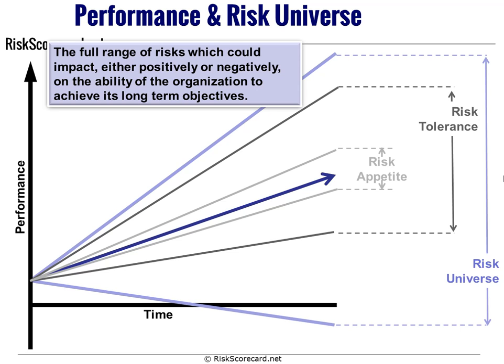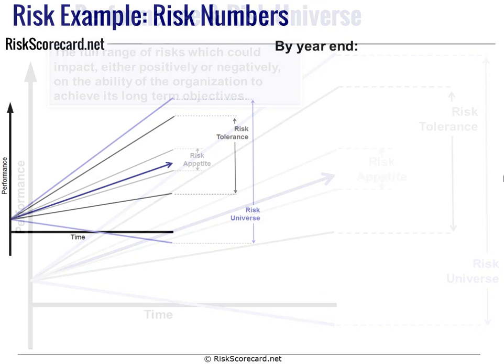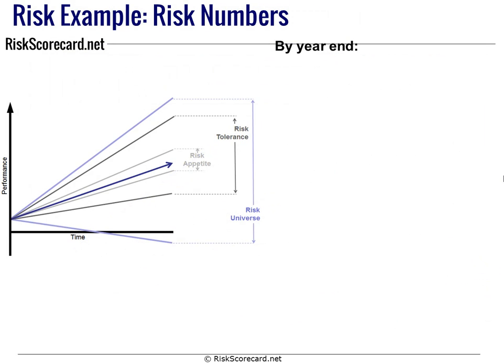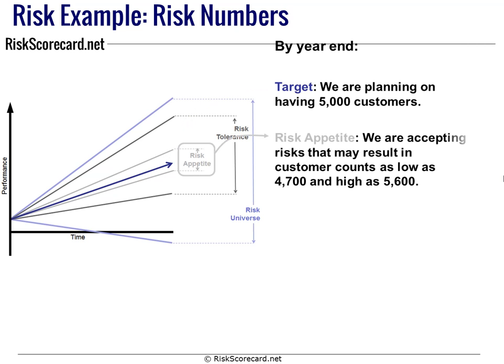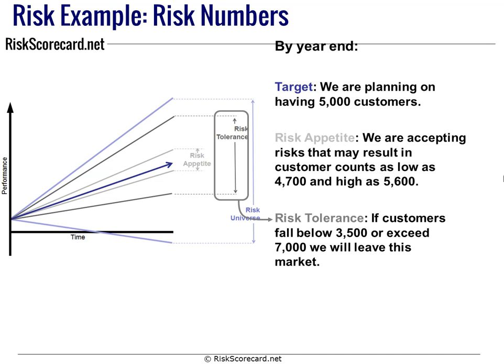Given that framework, if we take a look at our performance — say our target performance is 5,000 customers — our risk appetite means we're accepting risks that could result in a customer count as low as 4,700 or as high as 5,600. If we're in that range, we're okay. But if we exceed that — if we end up with fewer than 3,500 customers or over 7,000 — we have a crisis on our hands and need to deal with it in special ways.